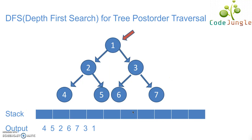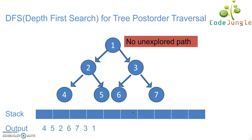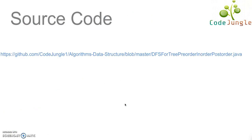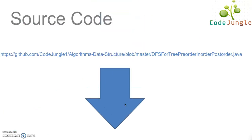Now if we notice, there are no more elements in the stack and there are no unexplored paths left in the tree. With this, the postorder traversal for the tree has been done, where first we entered the left hand element, then the right hand element, and then the root node element. That's all for this video. A link for the source code is given below in the description box. If you like the video, don't forget to hit the like button and do comment, share and subscribe to the channel. We will be back soon with more videos. Thanks for watching.